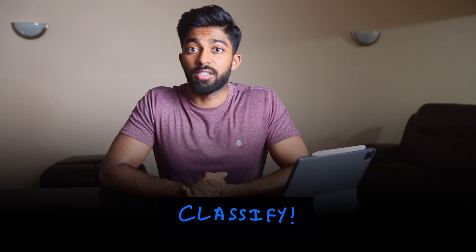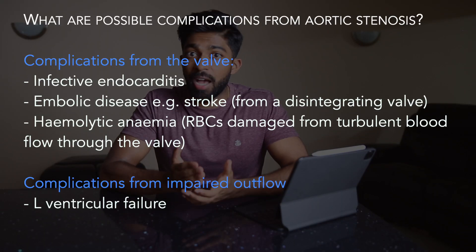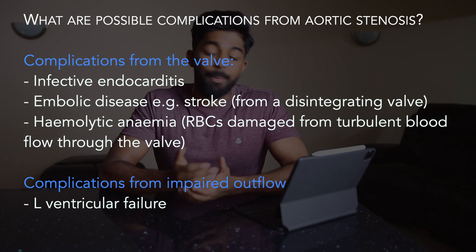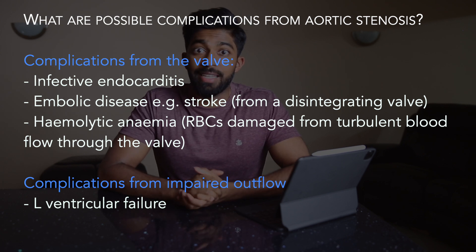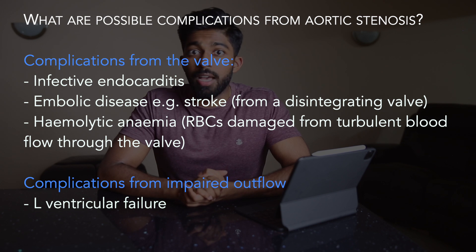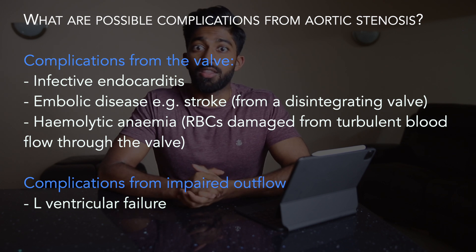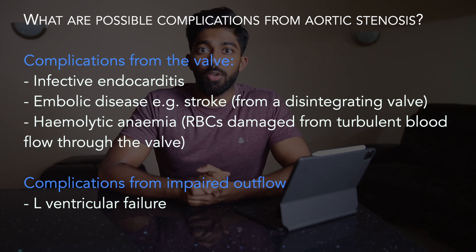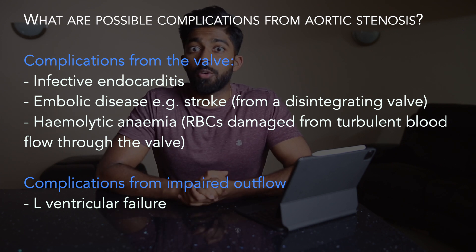You could also get asked about the complications of aortic stenosis. It's always better to give a clear structured answer, and a good way is to classify things. For example, here you could classify into complications from the valve itself — such as infective endocarditis, embolic disease such as a stroke from a disintegrating calcific valve, and haemolytic anaemia where red blood cells get damaged passing through the valve — or complications from the outflow obstruction, such as left ventricular failure.